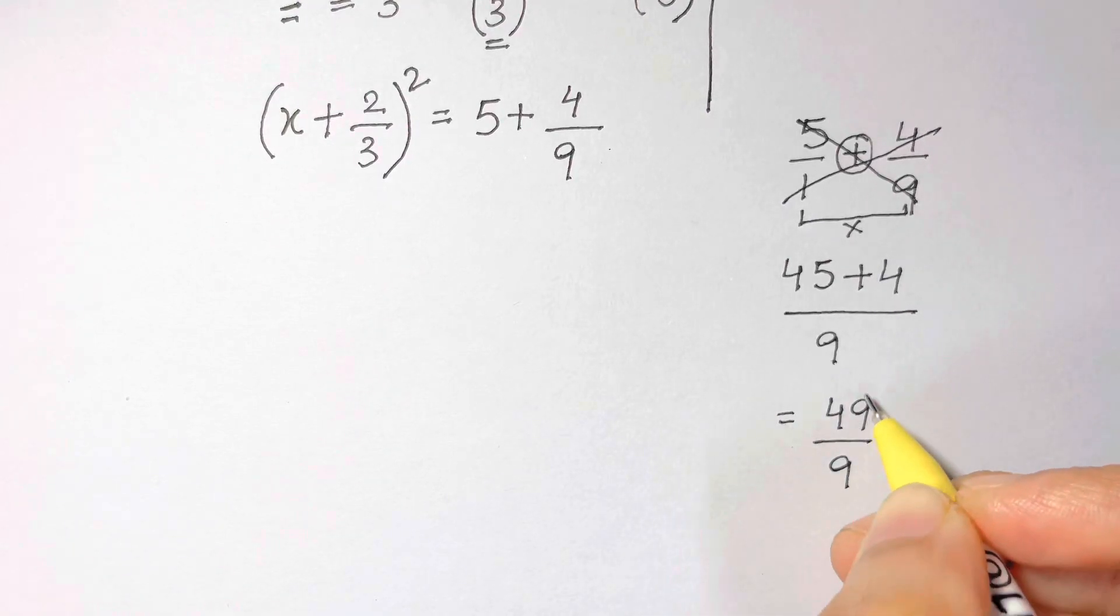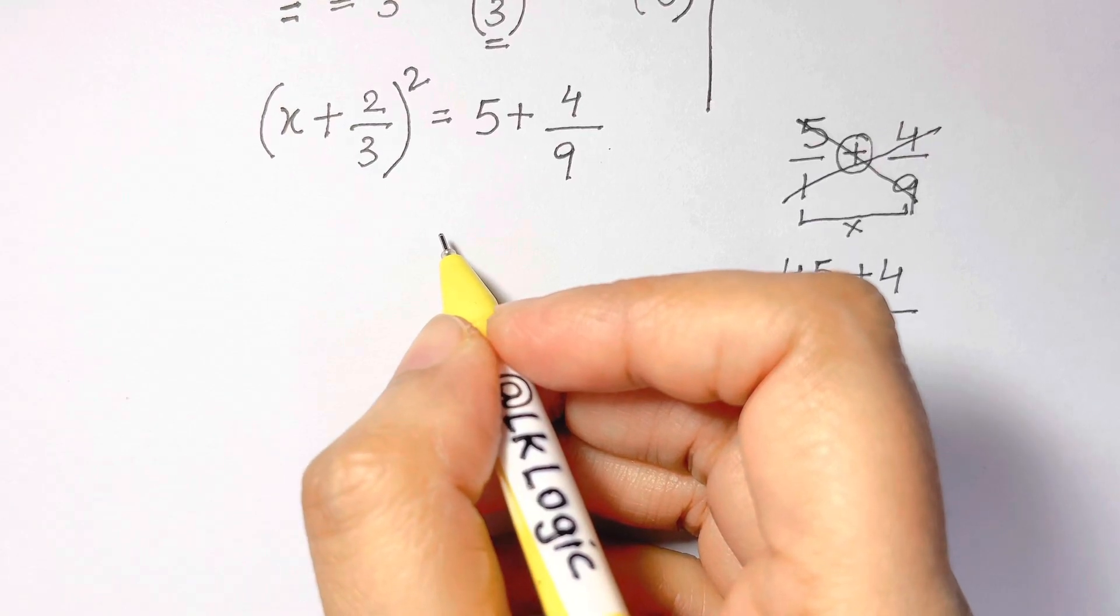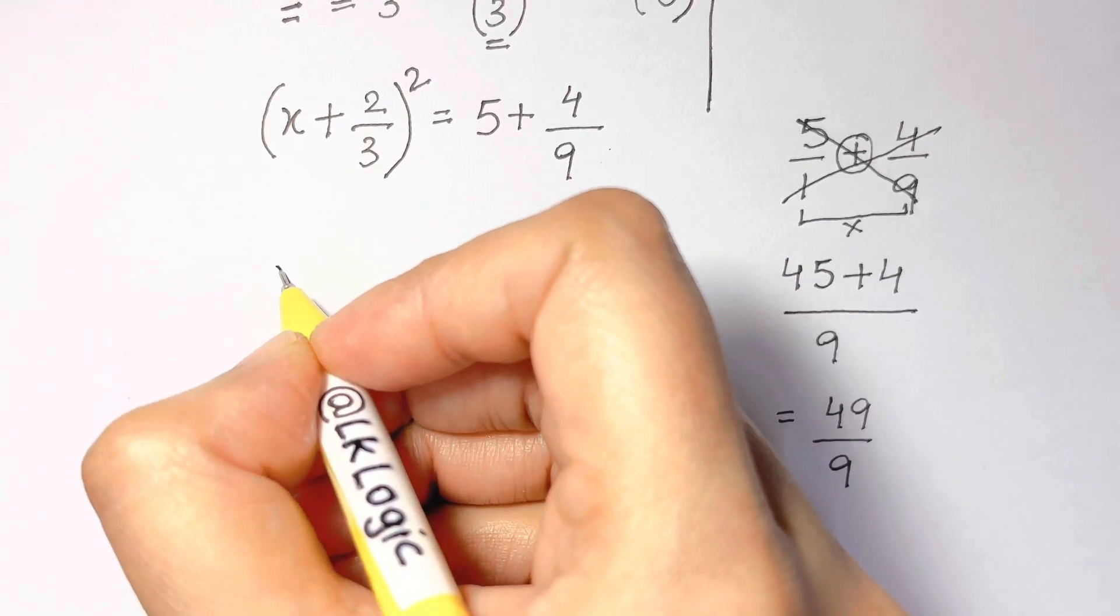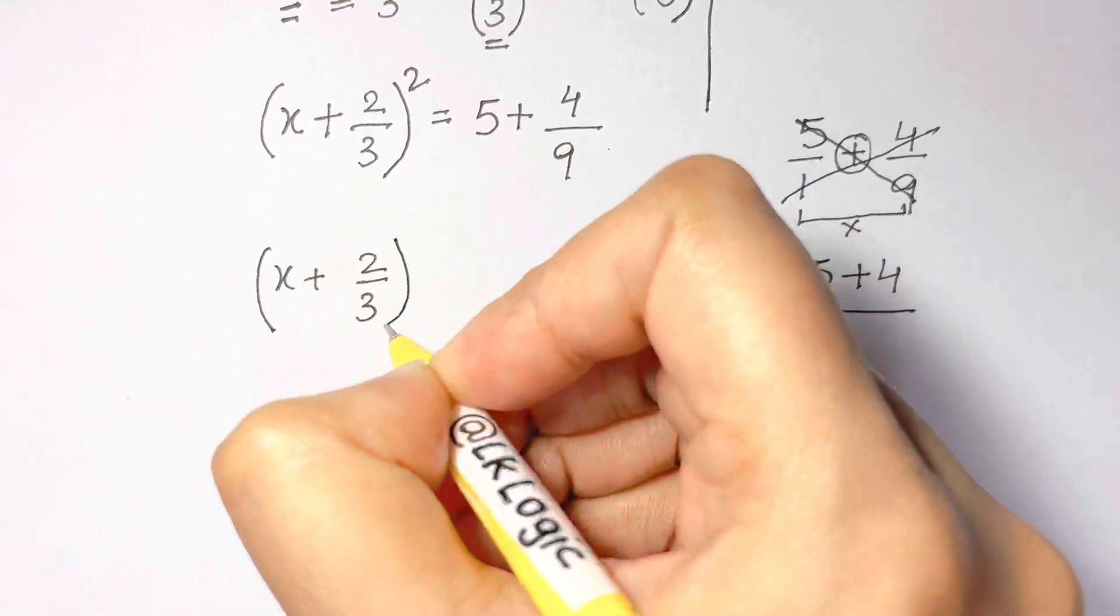This is the simplest way you can add or subtract any two fractions. I have also uploaded many videos on this before. So let's go ahead and take care of this thing. (x + 2/3)² = 49/9.